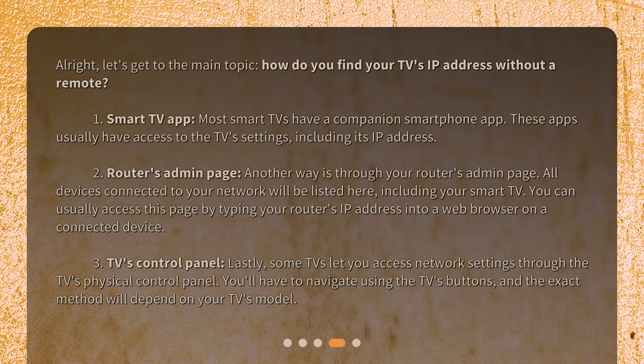Method 3: TV's control panel. Lastly, some TVs let you access network settings through the TV's physical control panel. You'll have to navigate using the TV's buttons, and the exact method will depend on your TV's model.